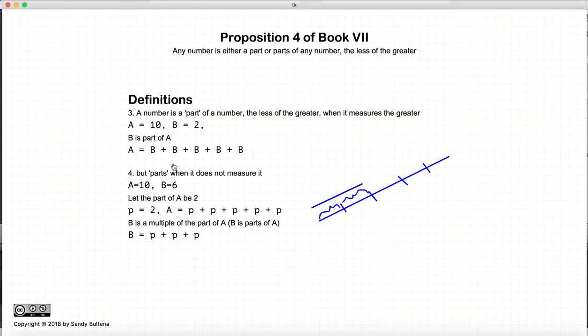And essentially, what Euclid's proposition is trying to demonstrate is that any number, and this is a whole number or a natural number, this is not real number, so we're not dealing with anything like the square root of 2. So, any whole number is either a part or parts of the other number that is larger. So, somehow, we can measure them and compare them.